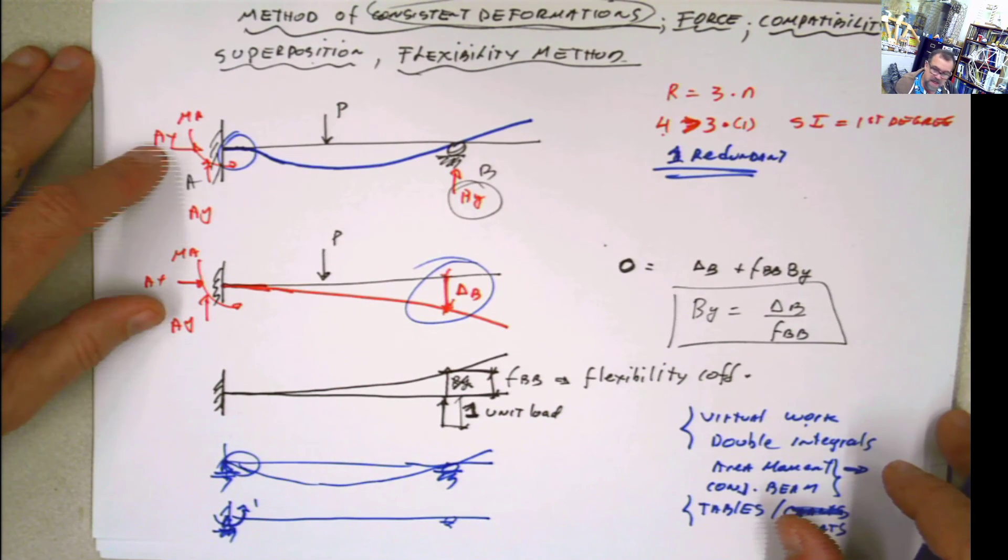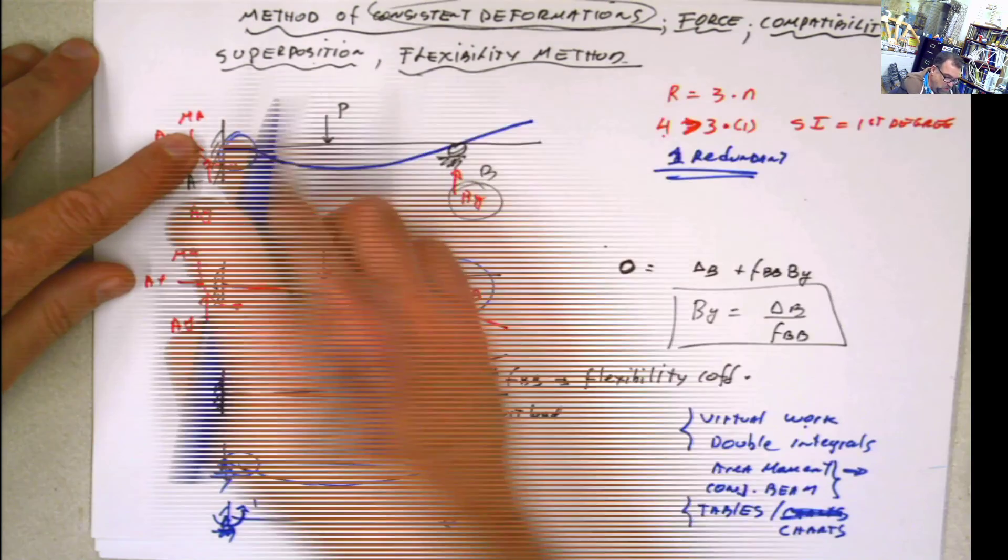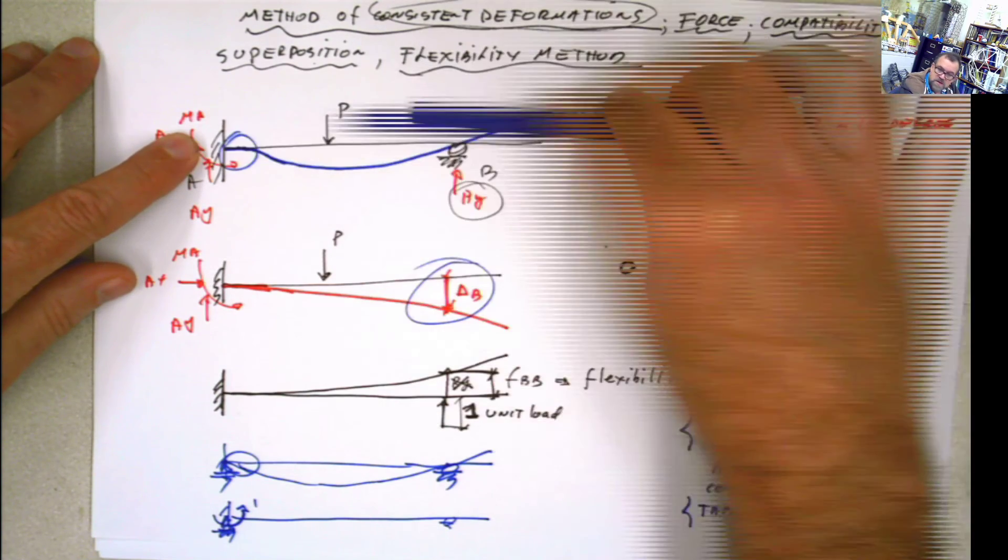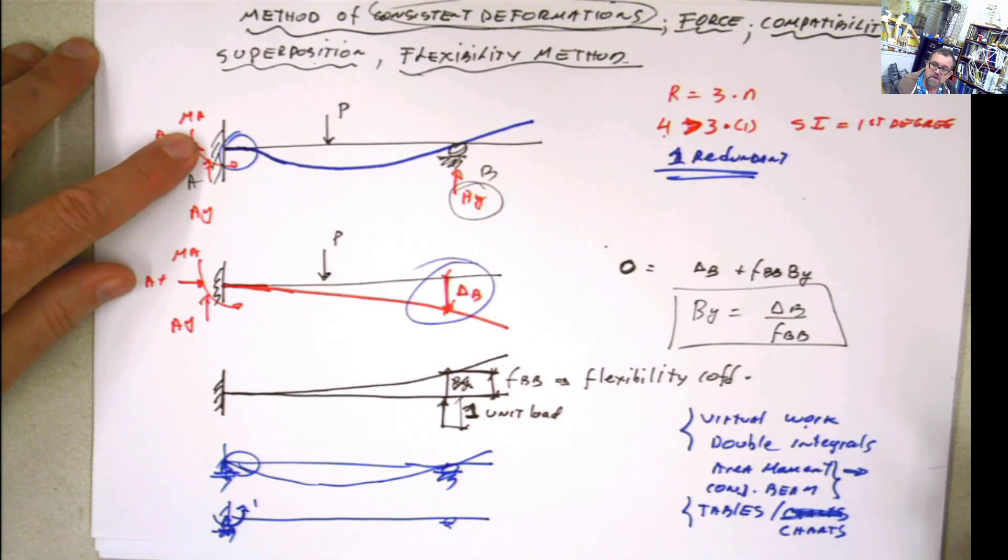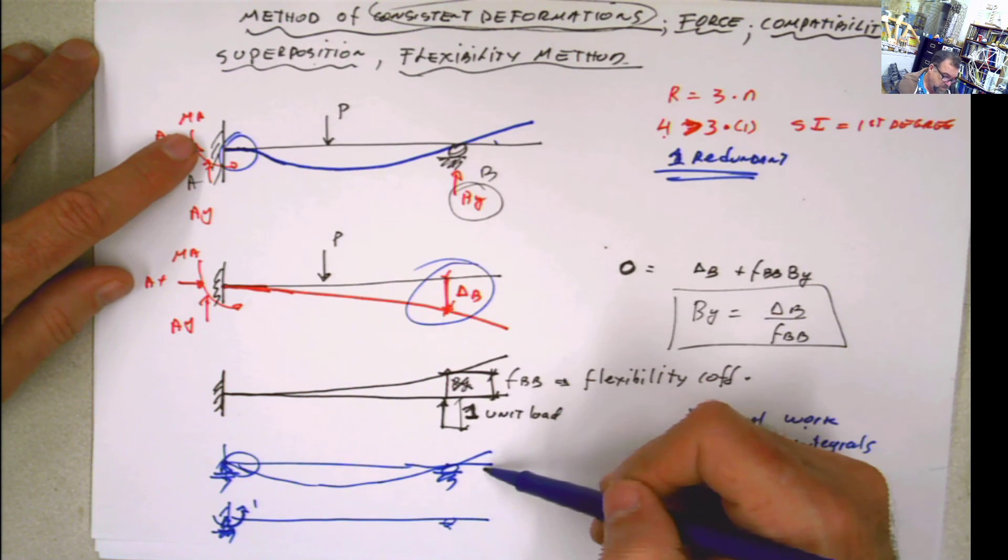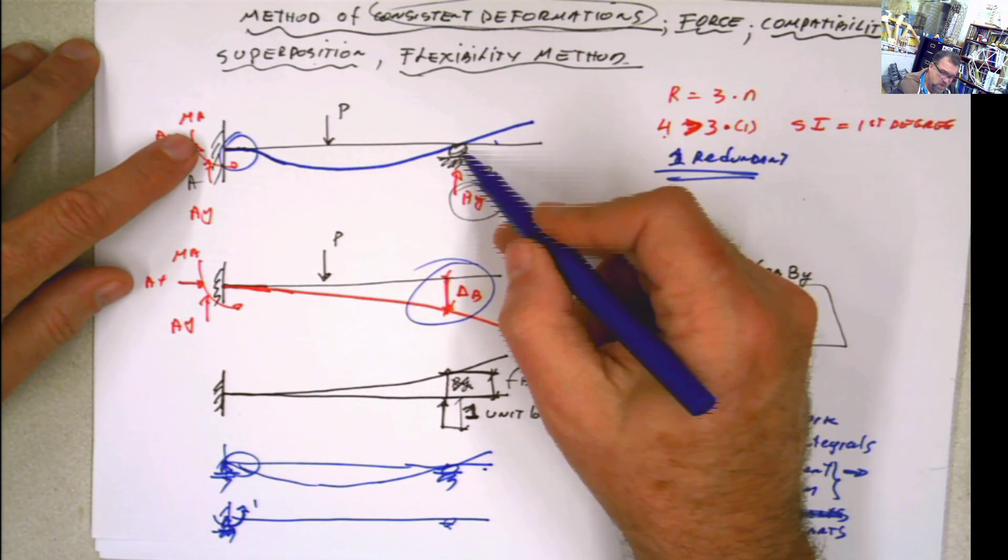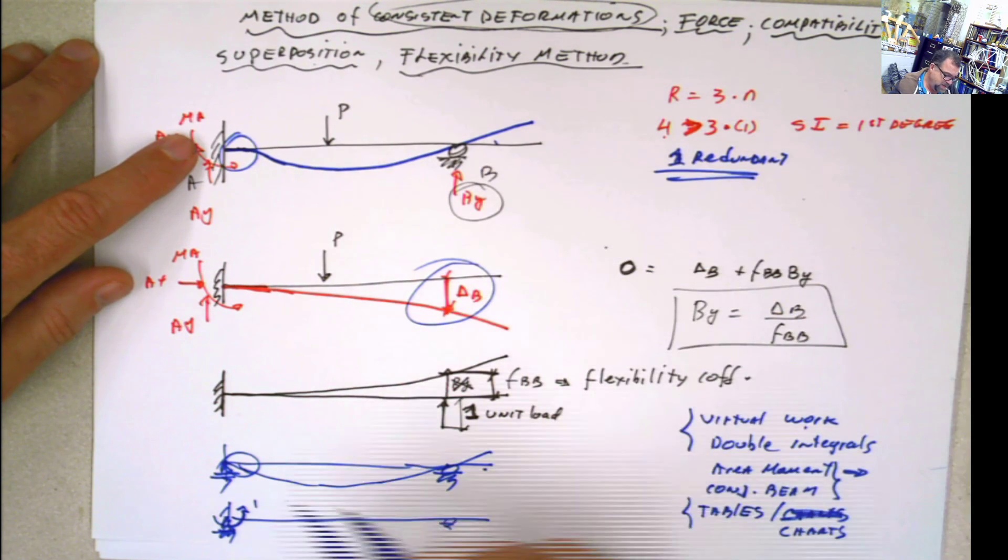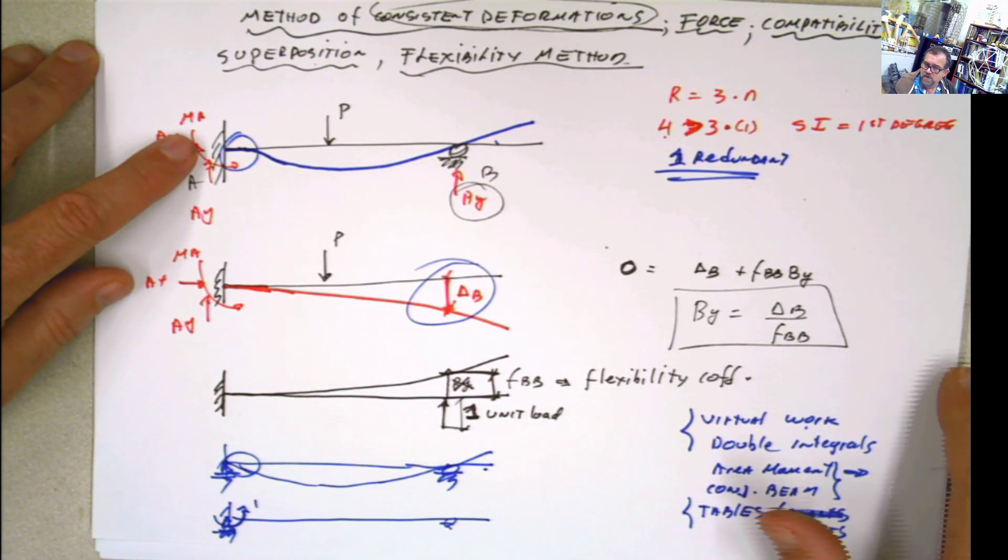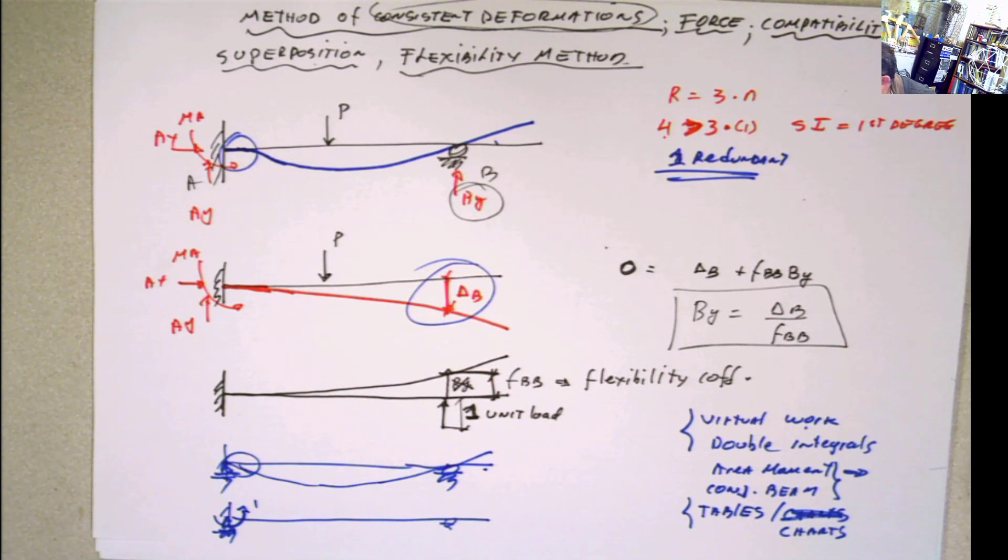Now you can say, what if I select Ax? Well if you select Ax as a redundant, basically this is going to move, this is going to be free to slide, and the structure is going to be unstable and that's not going to be good and you're not going to be able to calculate that. Now what I'm going to do, I'm going to do a problem like this in two ways. I'm going to select first By as a redundant, and then I'm going to select the rotation or the moment over there as a redundant. Keep watching, see you in the next video. Or you'll see me in the next video.